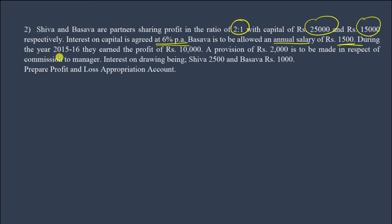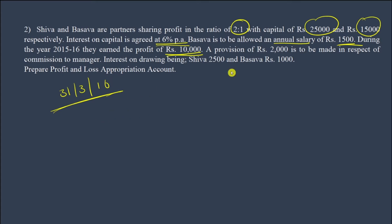During the year 2015-2016, they earned a profit of 10,000 rupees. A provision of 2,000 rupees is to be made in respect of commission to the manager.